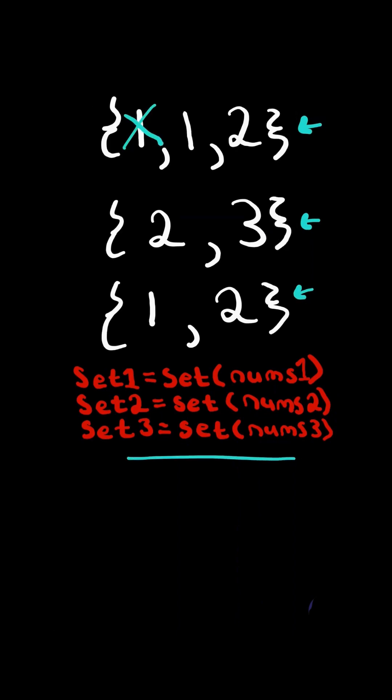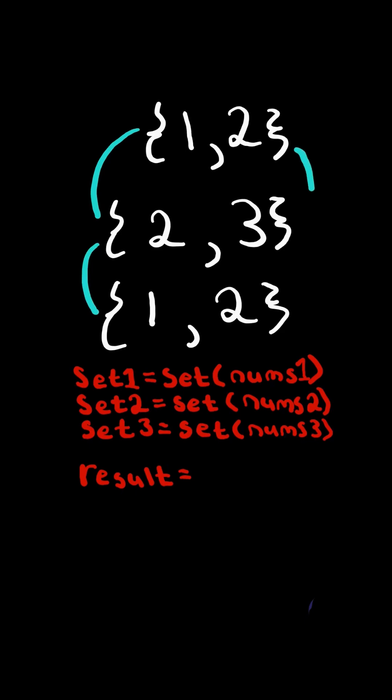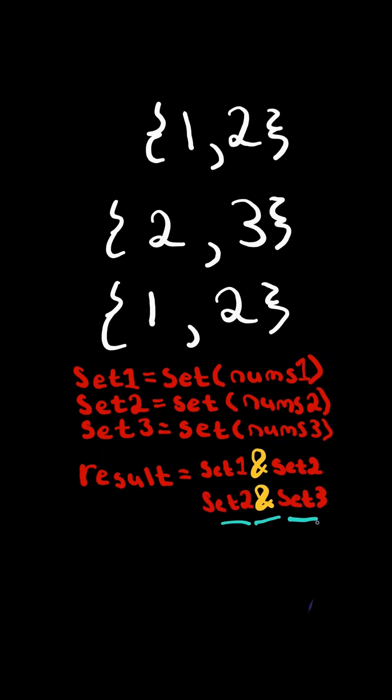This will remove any duplicates. Then we will find common elements between any two sets by taking the intersection between set one and set two, and the intersection between set two and set three, and the intersection between set one and set three. Each calculation gives us common elements between any two sets, and we will union or combine the results together.